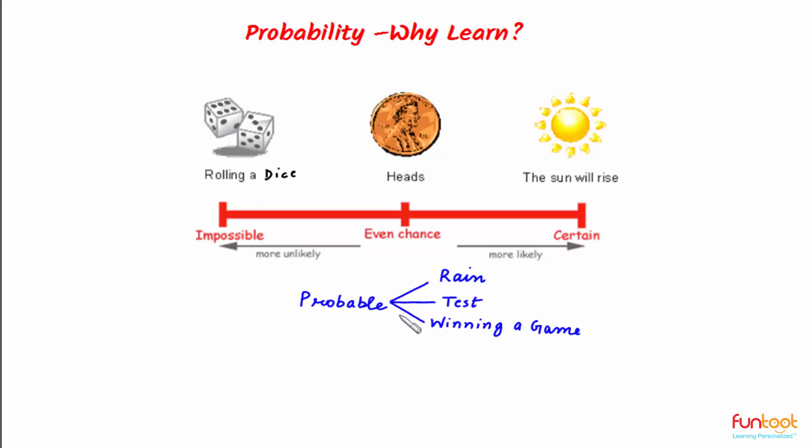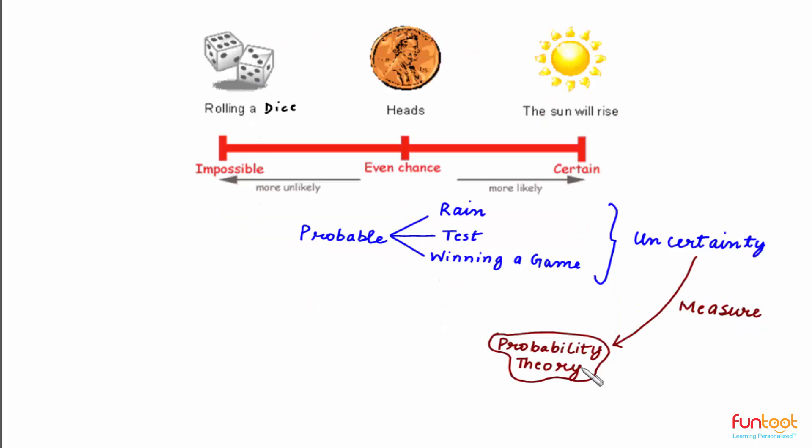When this word probable is used in context of rain, test, or winning a game, in all the cases it implies uncertainty. With the help of probability theory, we measure this uncertainty.